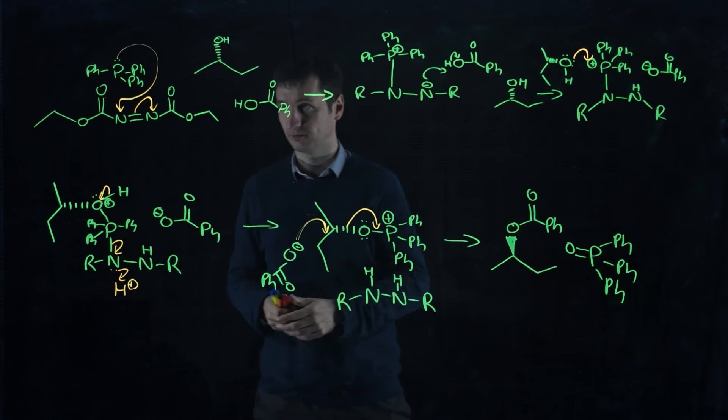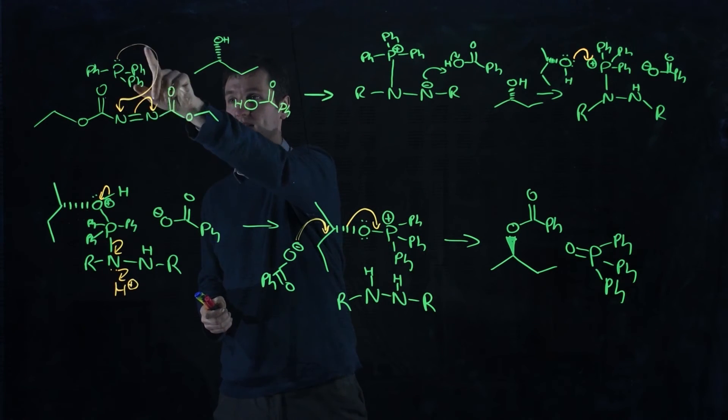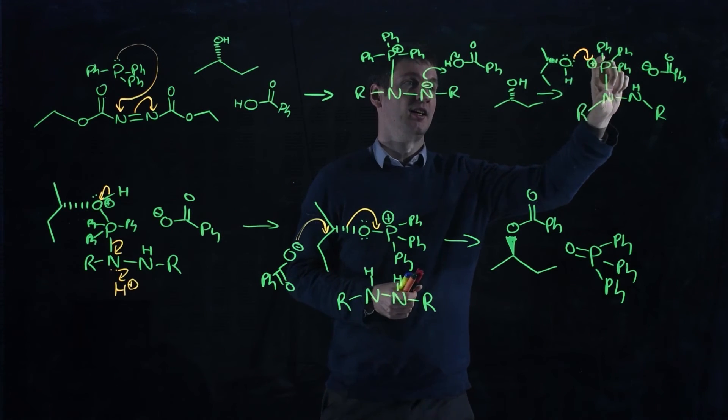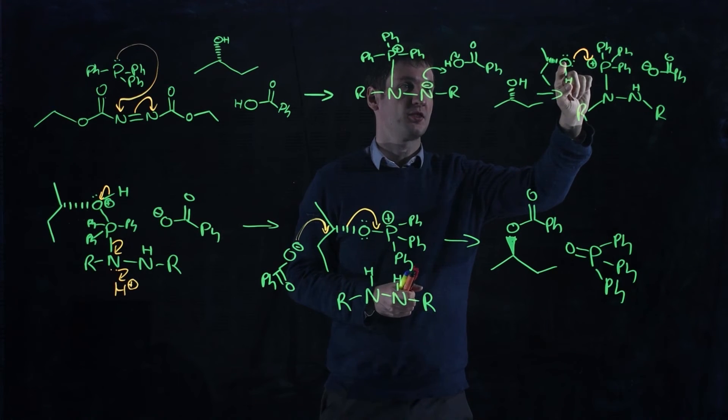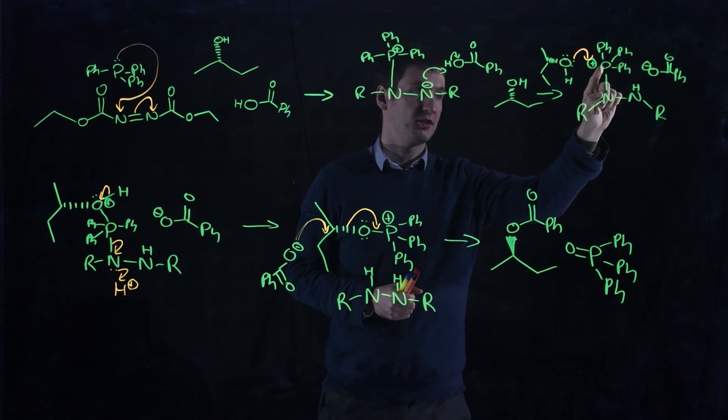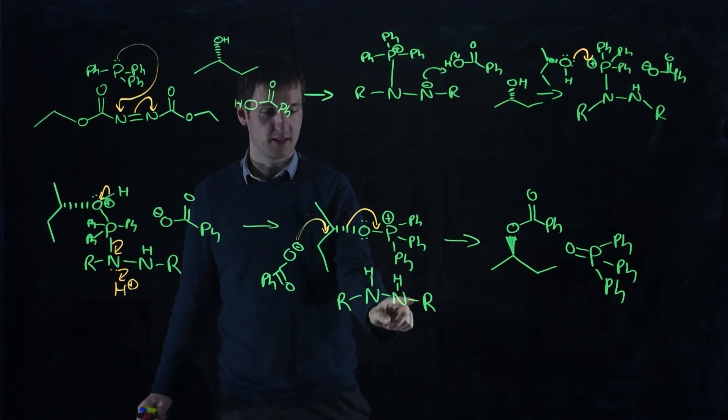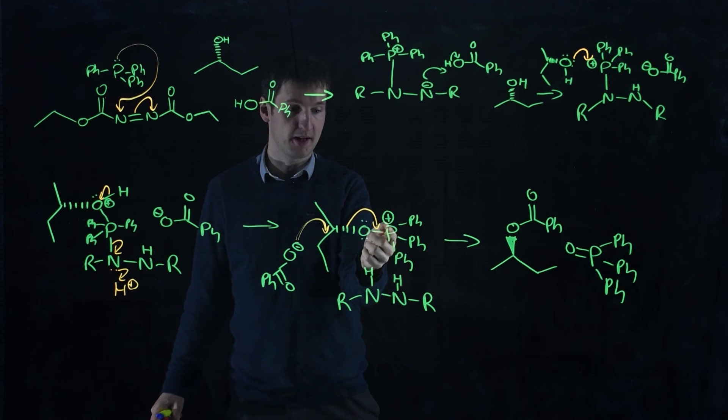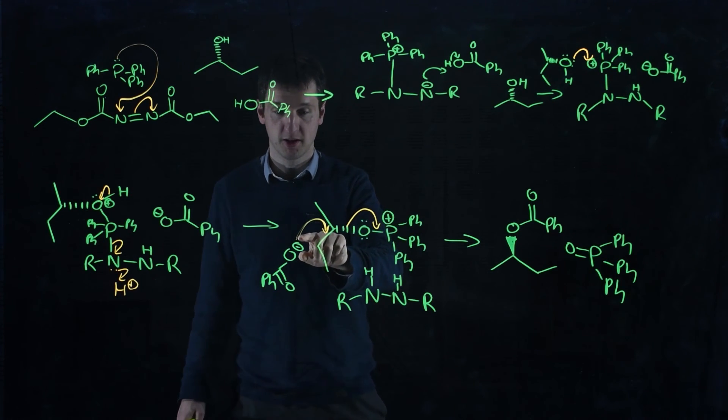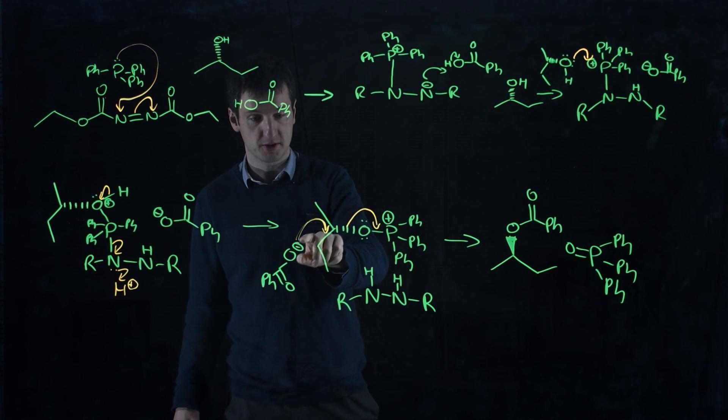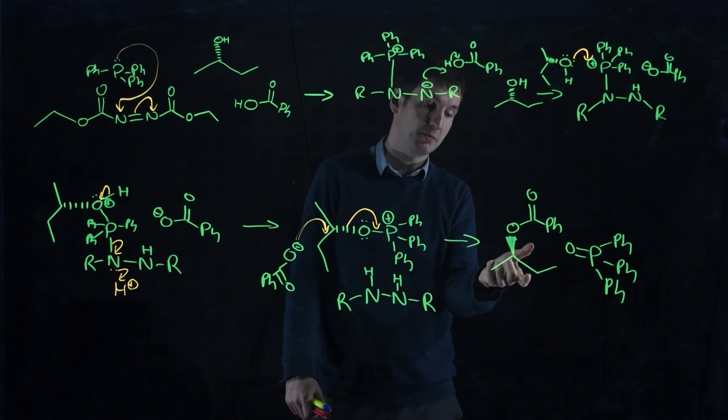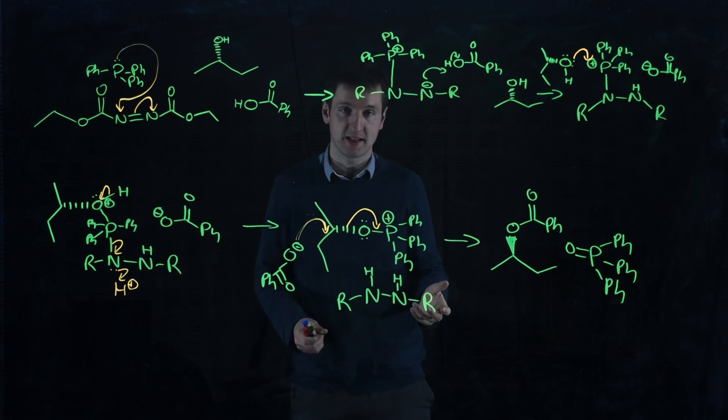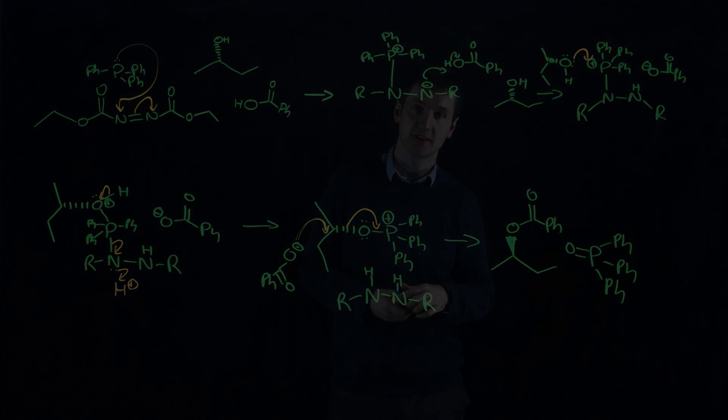So that's the Mitsunobu reaction. Starts off life with phosphorus as a nucleophile, creates your intermediate, deprotonate the carboxylic acid, use your oxygen in your alcohol as a nucleophile to finish reducing the hydrazine, kick the hydrazine out and ignore it. Then your oxygen, because it's now bonded to a positive phosphorus with a positive charge on it, is a really good leaving group. So your weak nucleophile comes along and forms a new oxygen-carbon bond, and you end up with inversion of stereochemistry. If you have any questions, post them below or ask me in class. I hope that's been helpful. That's all for now, bye.